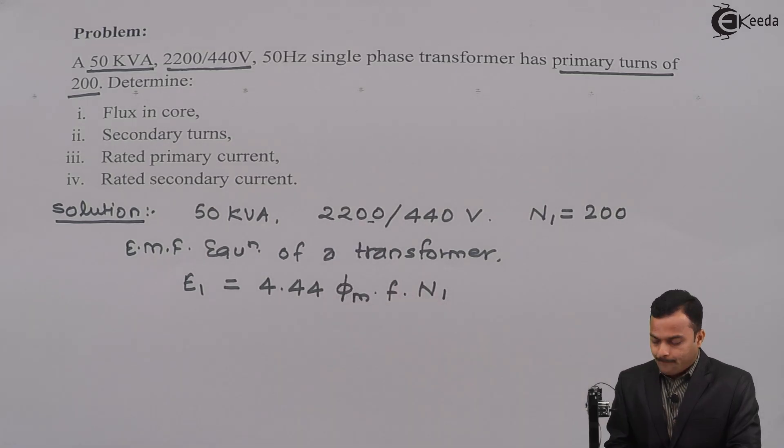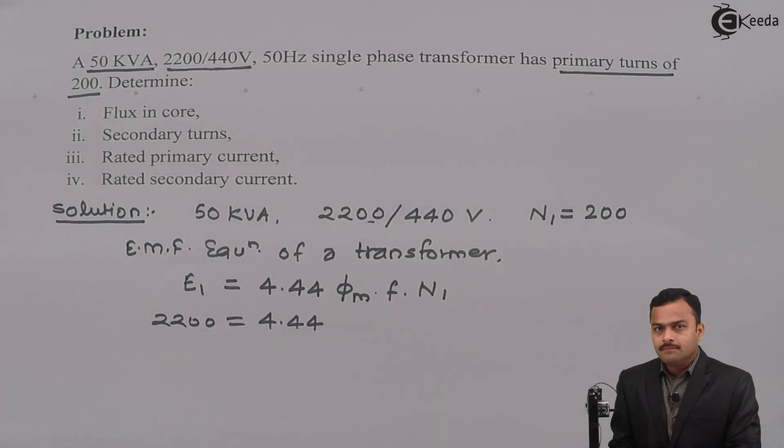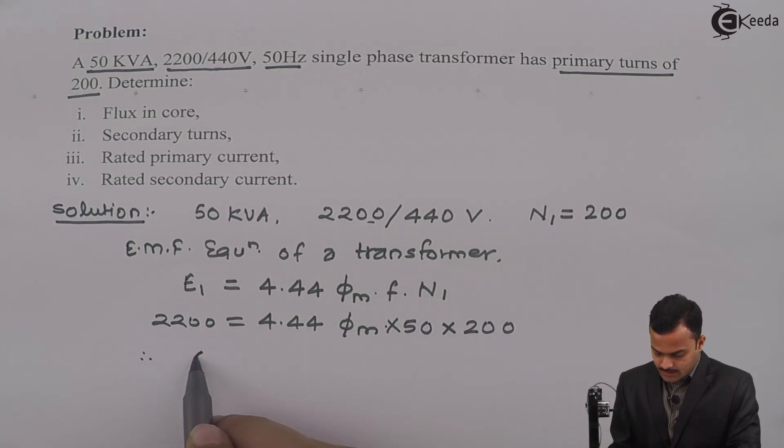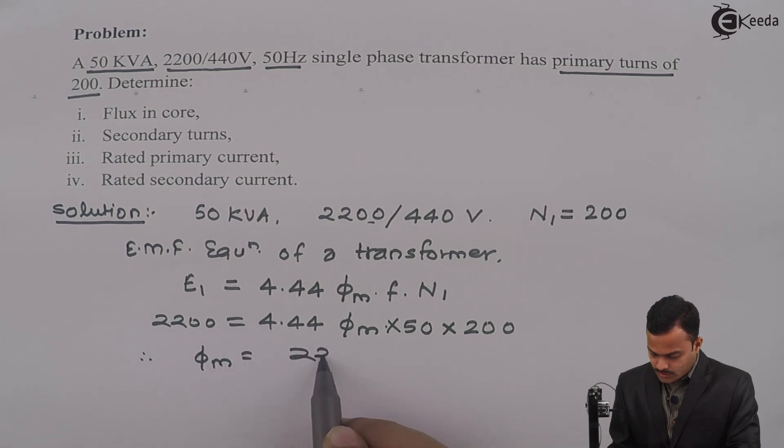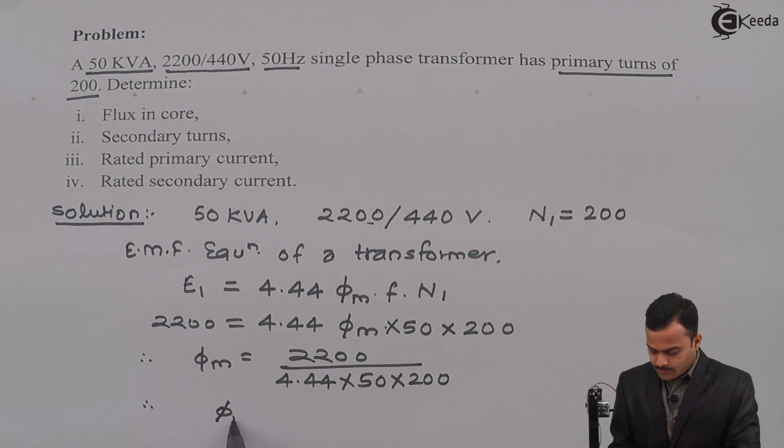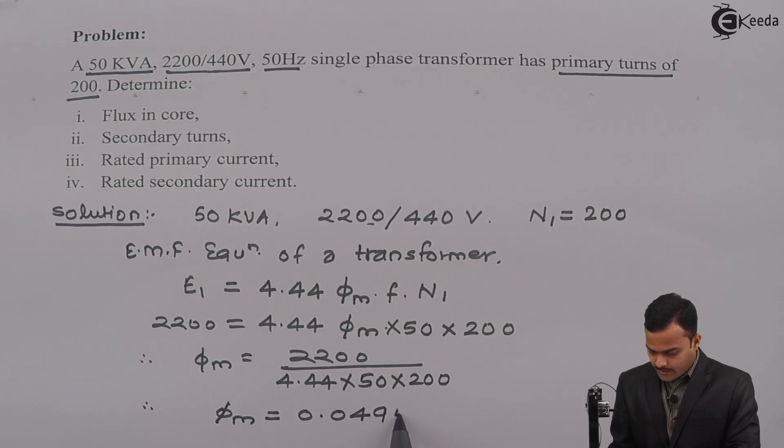Certain things are given. This is E₁, primary side induced EMF. Φₘ is the maximum flux inside the core that we are supposed to calculate. Frequency is 50 Hertz given, and number of primary turns are 200. If you solve this, you will get Φₘ = 2200 / (4.44 × 50 × 200). Using a calculator, you will get maximum flux in the core equal to 0.0495 Weber.